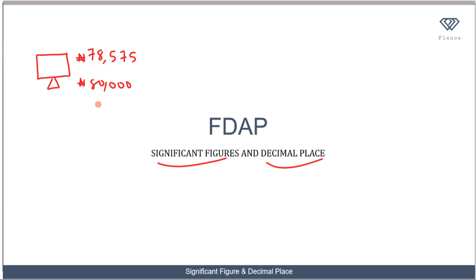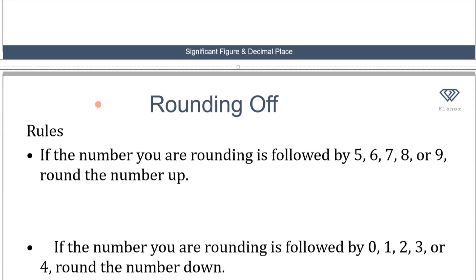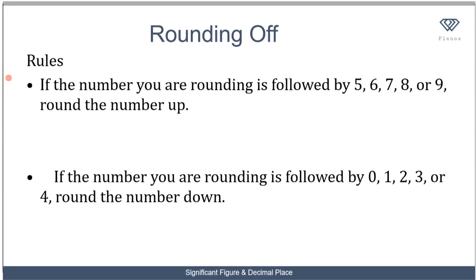That is the significance of significant figures and decimal places - it allows us to reduce numbers to forms that are easier to think about and work with. To understand this concept we first have to talk about rounding off. Rounding off means changing some of the non-significant digits to zero. The rules that guide it: if the number you are rounding is followed by 5, 6, 7, 8, or 9, round the number up.